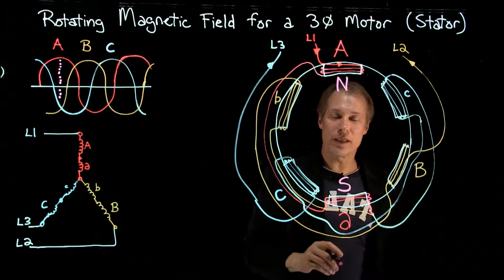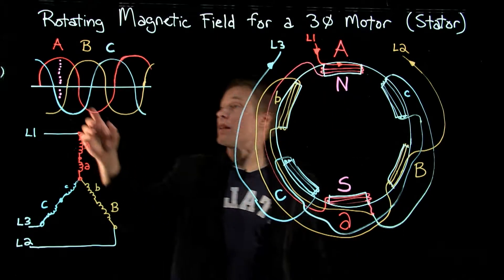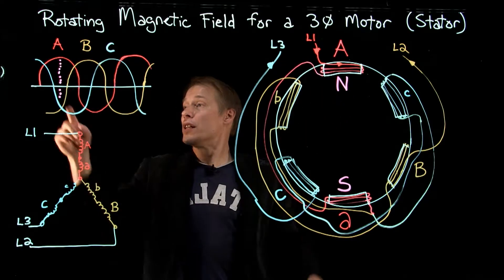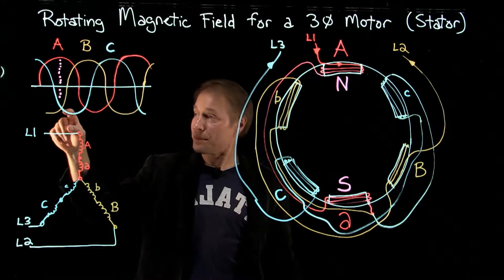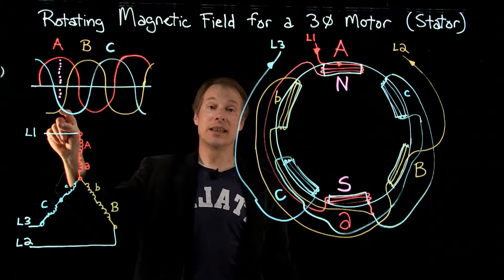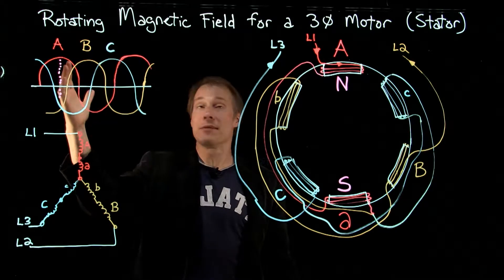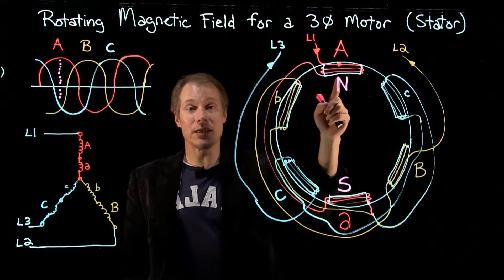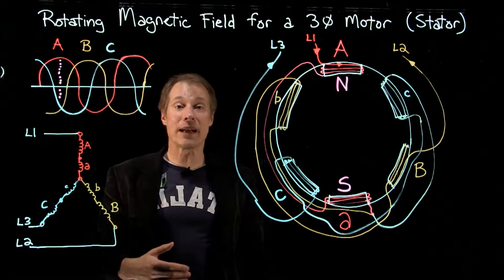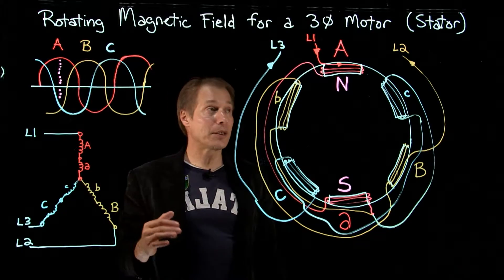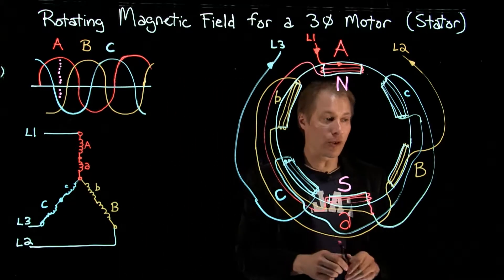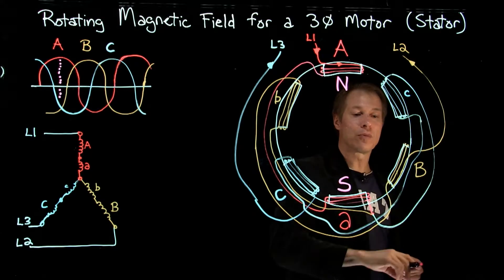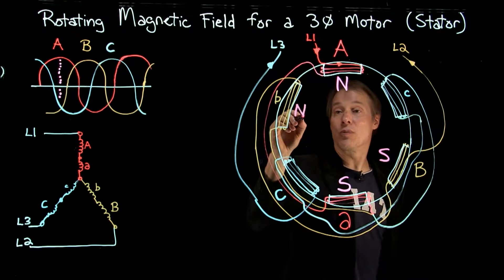This coil is wrapped the same, giving us the south pole here. One thing to note: the sine wave is above the line for L1, meaning the current is going one direction for L1. For L2 and L3, they're below this line, so those currents are going in the opposite direction at that same time. If this is the source, the current is coming from the source for the A phase, which means for L2 and L3 the current is going back to the source. Following the left-hand rule, with current going back to the source in that direction, my fingers go this way — that's the north pole, giving this a south pole.